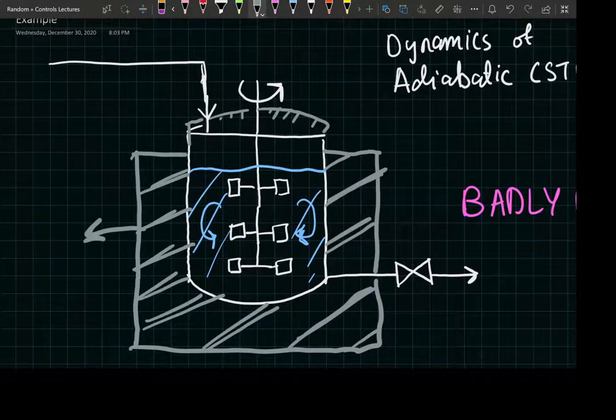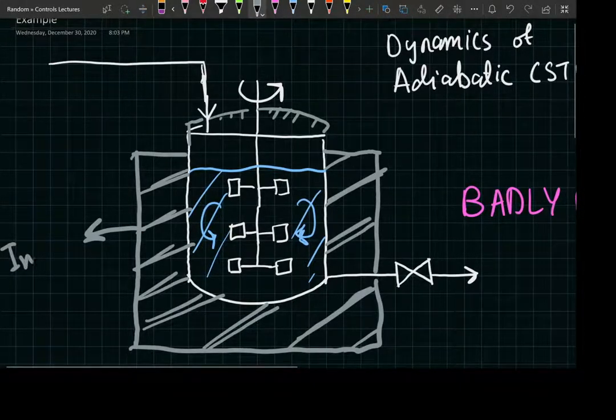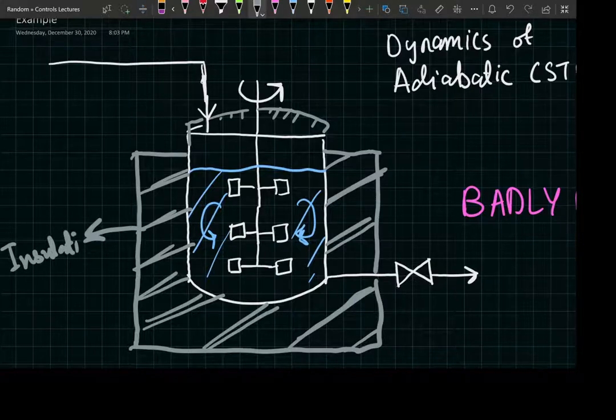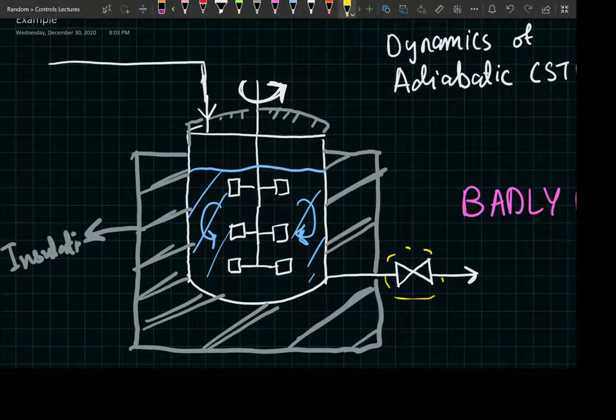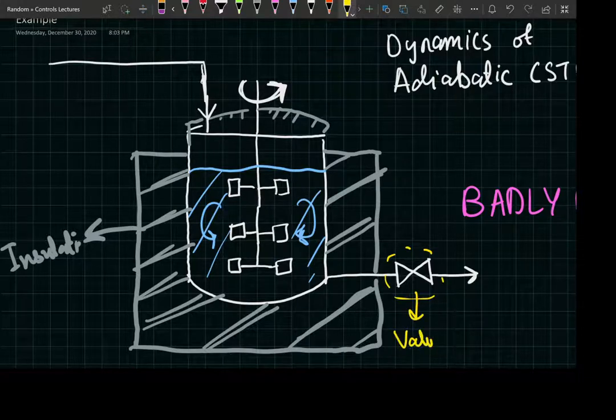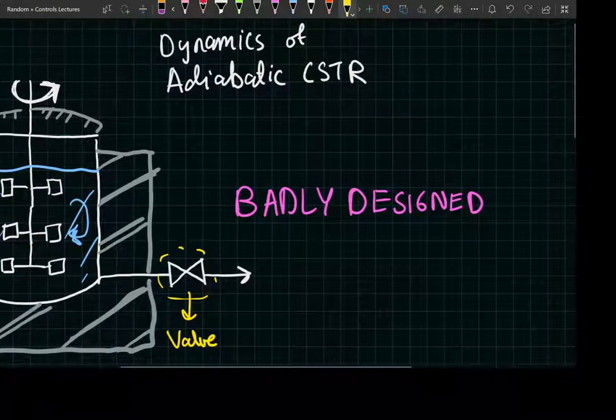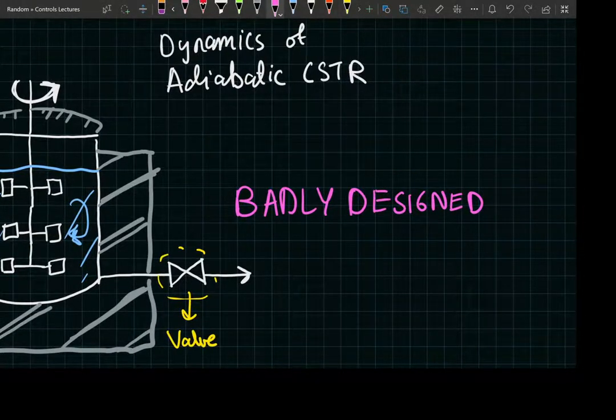Let me just label: we have the insulation here, and as you can see, we have the impeller that's going to keep the system well mixed. We have the control valve—a valve that we will use to control the exit flow rate.